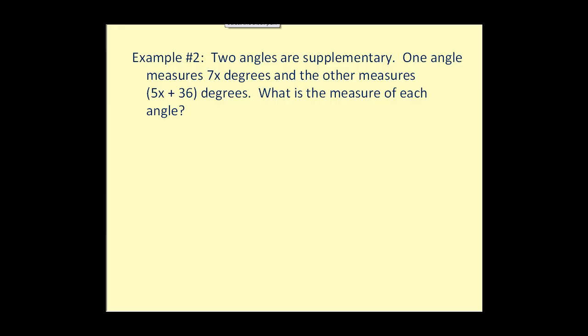Let's take a look at one more example. Now we have two angles that are supplementary. So they would form one hundred eighty degrees. And it says here that one measures seven x degrees. And the other one is five x plus thirty-six degrees. So again, the sum of these two angles would now equal one hundred eighty degrees.